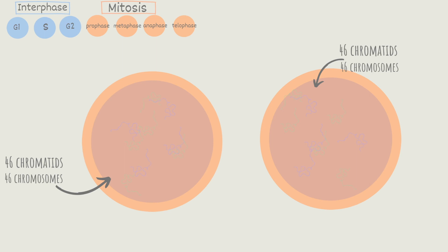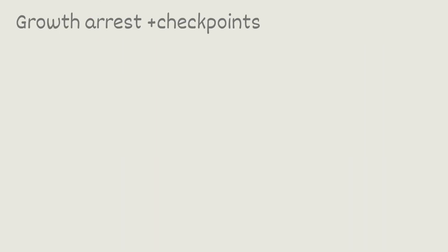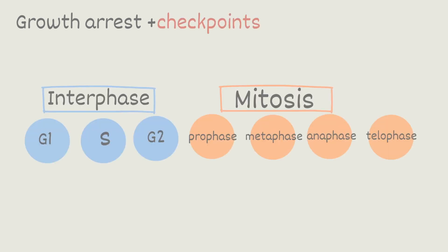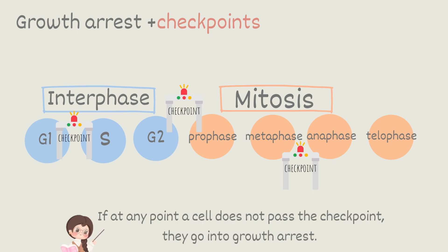Okay, so we've gone over the entire cell cycle, but there are a few other important points you need to know about cell division. One is understanding growth arrest and checkpoints. There are checkpoints within the cell cycle. There's one between G1 and S phase, one between G2 and mitosis or prophase, and one more between metaphase and anaphase. Cells must pass these checkpoints in order to move on to the next phase.